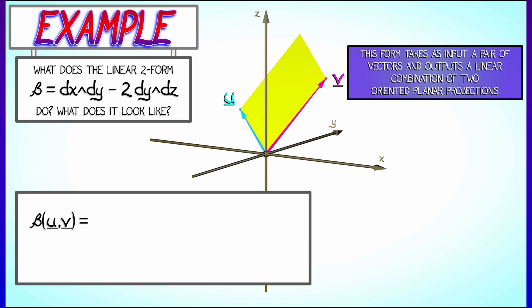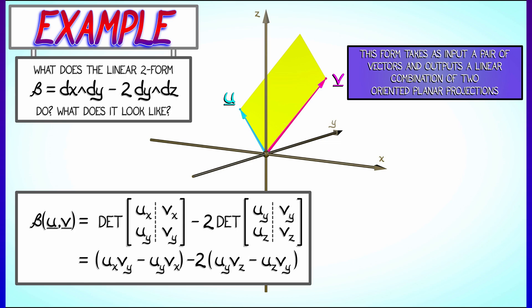then algebraically, what beta does is it takes the x and y components of u and v, pops them into a 2 by 2 matrix, takes the determinant of that, and then subtracts off what you get when you compute the y and z components of those vectors, pop those into a 2 by 2 matrix, take the determinant, and then multiply by negative 2. Expand that out, and you get ux vy minus uy vx minus twice uy vz minus uz vy.